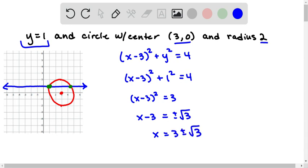So the coordinates of the points would be (3 + √3, 1) and (3 - √3, 1).